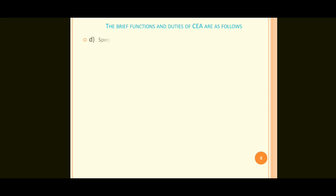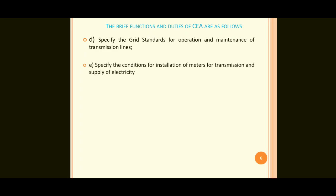Point D: specify the grid standards for operation and maintenance of transmission lines. Grid standards follow the rules of the Central Electricity Authority. Point E: specify the conditions for installation of meters for transmission and supply of electricity. Installation of meters also follows Central Electricity Authority rules.